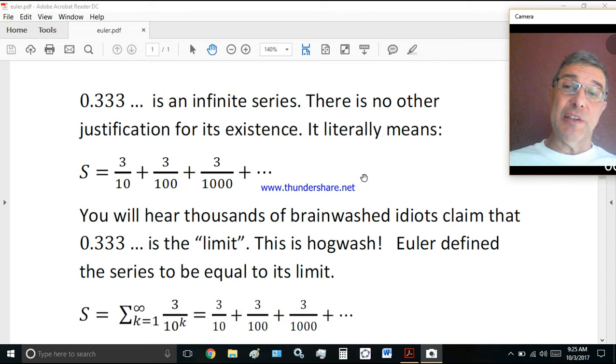You will hear thousands of brainwashed idiots claim that 0.333 dot dot dot is the limit. This is hogwash. Euler defined the series to be equal to its limit. Let's see how this works.